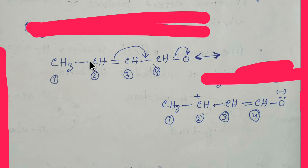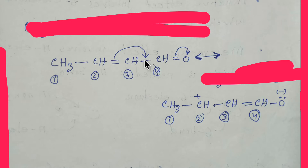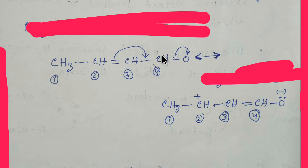Consider a compound with a single bond, double bond, single bond, double bond. If you number the carbon atoms one, two, three, four — the pi electrons from carbon one will come to carbon two, and this pi bond will move toward oxygen. As a result, carbon two becomes positive, the single bond becomes a double bond, and the oxygen becomes negative.